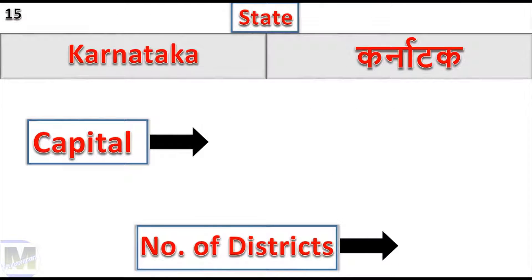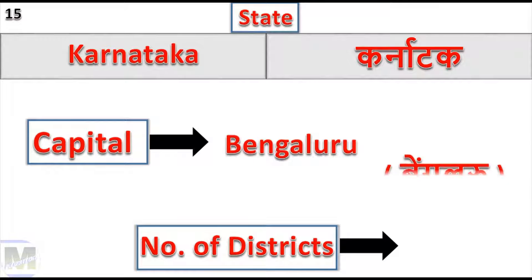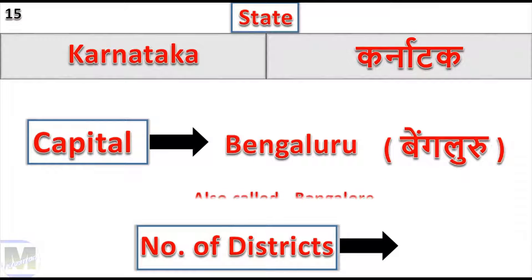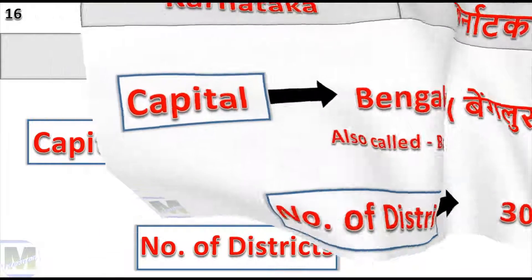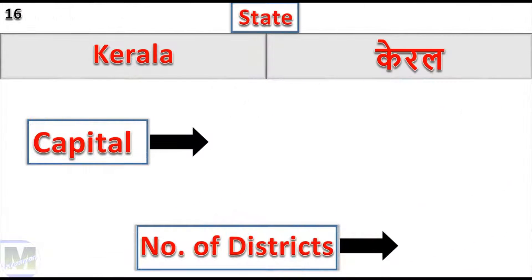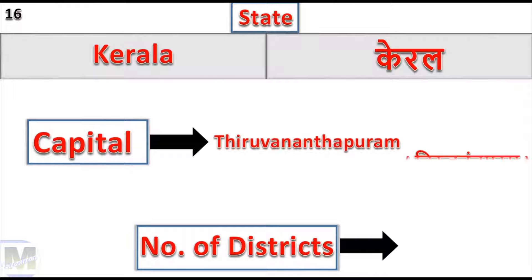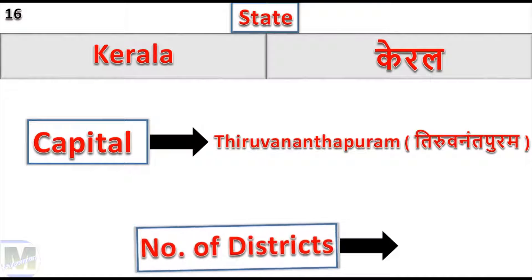Karnataka: Capital Bengaluru. Kerala: Capital Thiruvananthapuram, Number of Districts: 14.